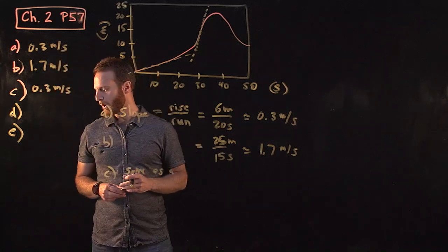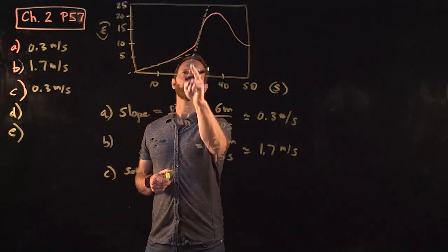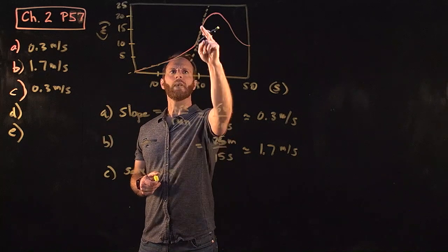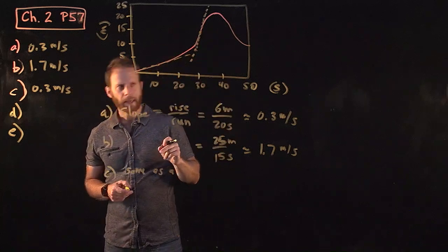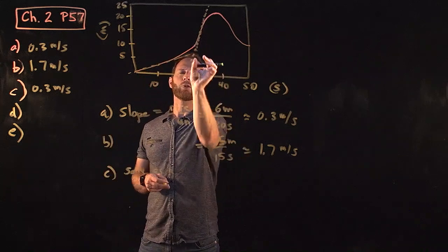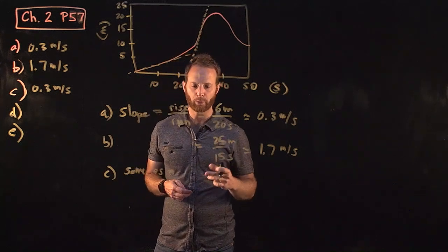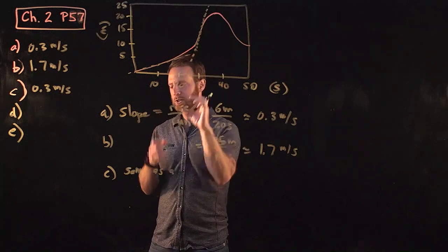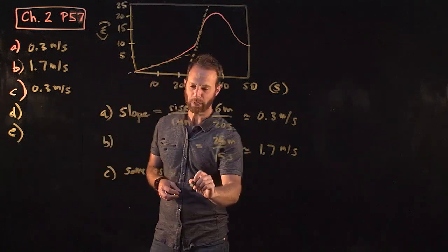Part D, we're supposed to figure out the average velocity between 25 and 30 seconds, so between about here and here. If you're really sloppy and you look at this, it looks like it rises about 5 meters over 5 seconds, so you might guess around 1 meter per second. But if you look more closely, it actually rises more like 7 meters.